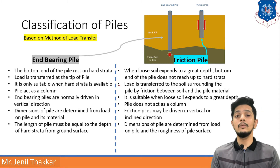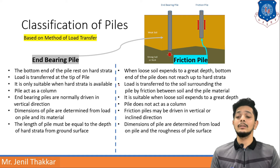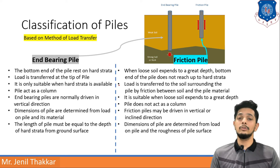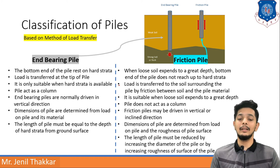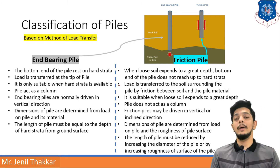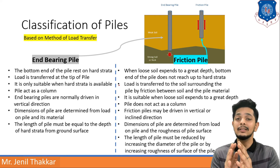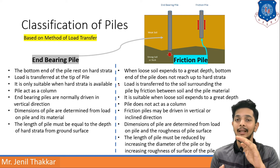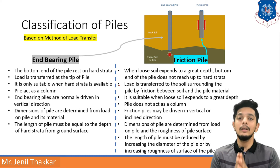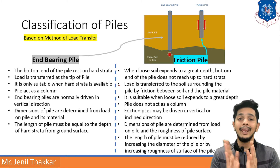The length of an end bearing pile must equal the depth of hard strata from the ground surface. For friction piles, the length can be reduced by increasing the diameter or by increasing the roughness of the surface. Since it works on friction, increasing diameter and decreasing length keeps the volume similar — making it an economical section.